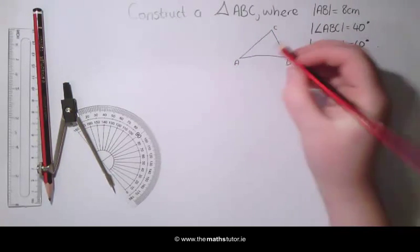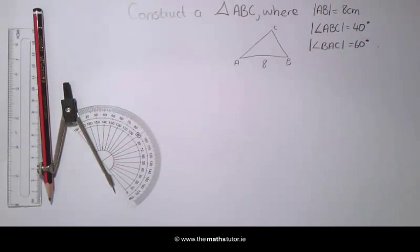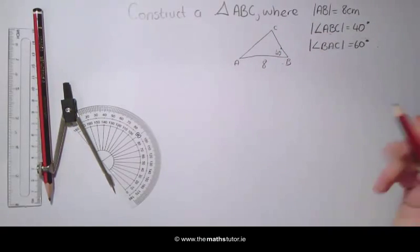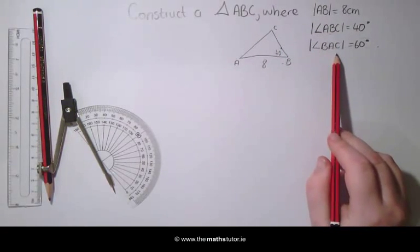AB is equal to 8 cm. The angle at B needs to be 40 degrees and the angle at A needs to be 60.